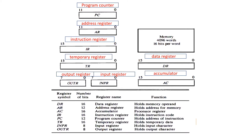In total we have 8 registers. We are going to discuss about basic computer registers. The memory in a basic computer has 4096 words and each word contains 16 bits. Now we will see about each and every register.